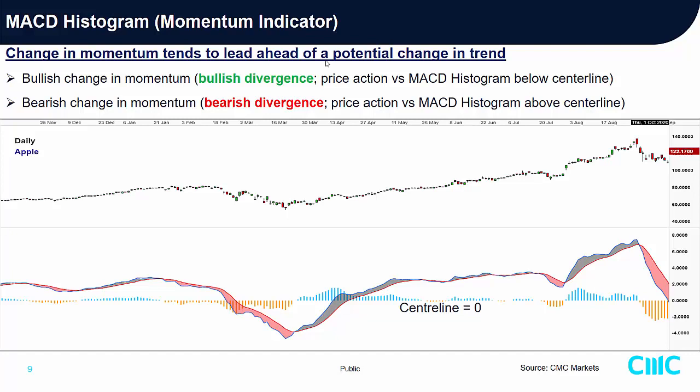Let's look at the MACD histogram — what is a bullish divergence? This represents a bullish change in momentum. The price of Apple is trading in a downtrend — lower high, lower low. But correspondingly, if you look at the histogram, it's actually sloping higher — a higher low — indicating that the speed of the lower low is slowing down. Most importantly, this occurrence happens before the price changes from a downtrend to an uptrend.